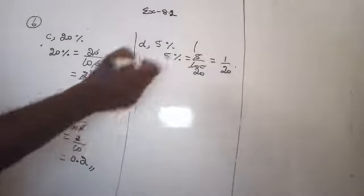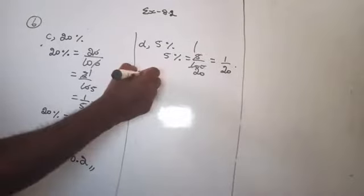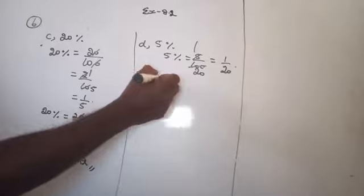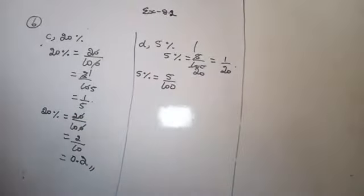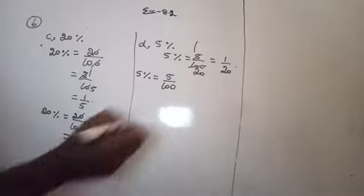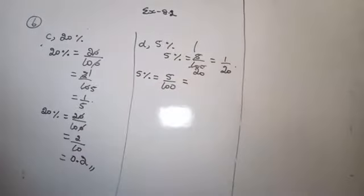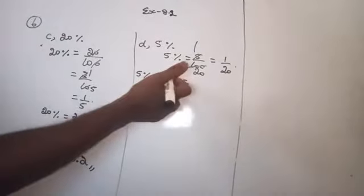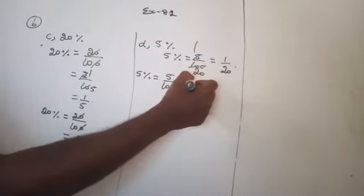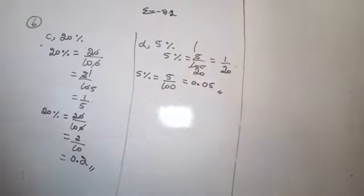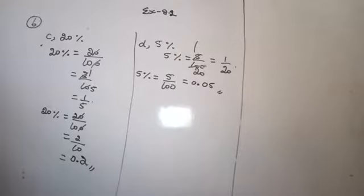Now express the given percentage into decimal form. 1% means 1/100, so 5% means 5/100. You have to shift 2 digits. There is already 1 digit, so that is 05, then 0.05.